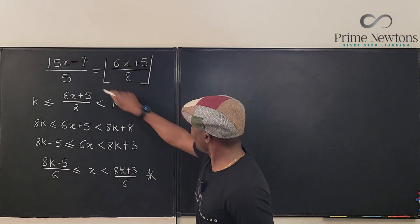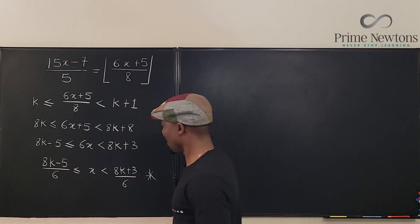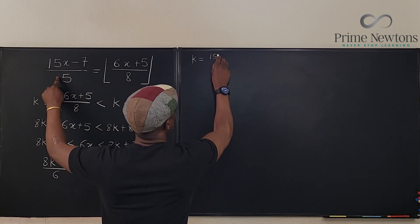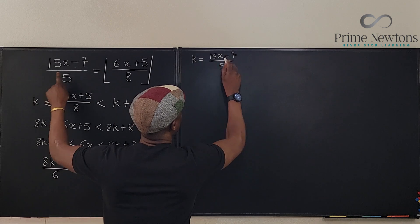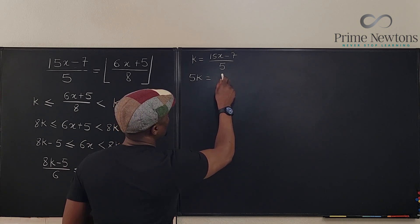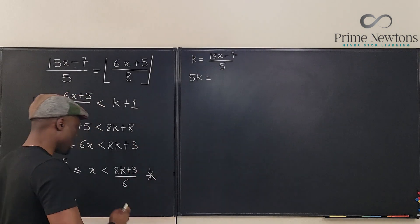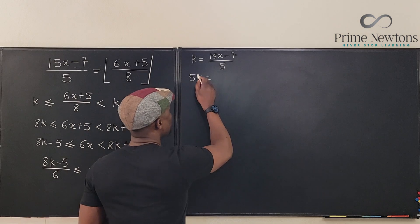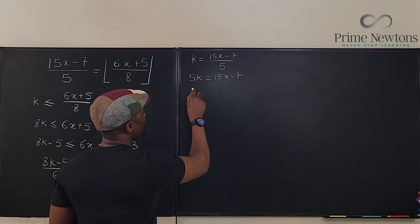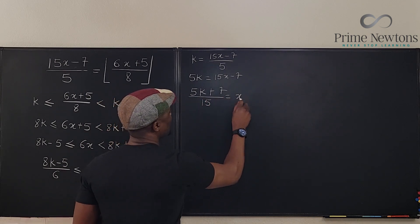We also know that k equals (15x − 7)/5. We can write x in terms of k — here we have an inequality, but we need an equation. Multiplying: 5k = 15x − 7, which gives us x = (5k + 7)/15.